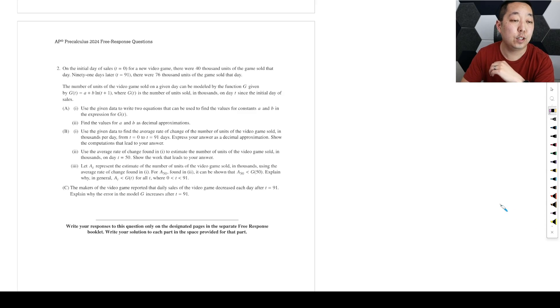All right, so this is the second FRQ from the AP Pre-Calculus 2024 exam. If there are any corrections, I'll put it in a pinned comment below. On the initial day of sales, a new video game, there were 40,000 units of the game sold that day. 91 days later, there were 76,000 units of that game sold that day.